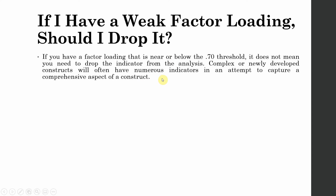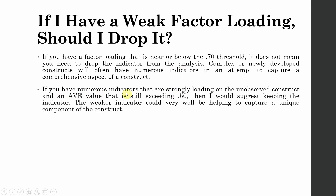It may so happen that out of those 7 or 8 indicators, you've got 4 that have low loadings less than 0.70. This does not mean you have to delete every single one of them. If you have numerous indicators that are strongly loading onto the unobserved construct and an AVE value that is still exceeding 0.50, then I would suggest keeping the indicator. Although your indicator is less than 0.70, if overall your AVE exceeds 0.50, you should keep the indicator. The weaker indicator could very well be helping to capture a unique component of the construct.